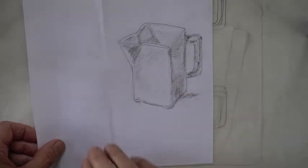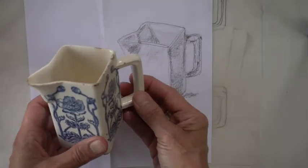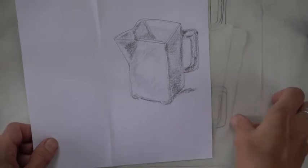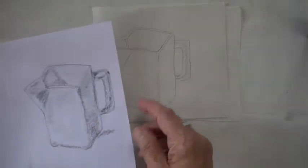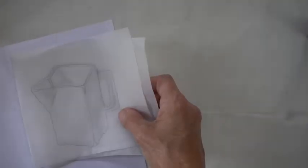So this was my initial observational drawing of this little jug. Then my pencil drawing is here. So that's the one that I traced by placing the tracing paper over here.